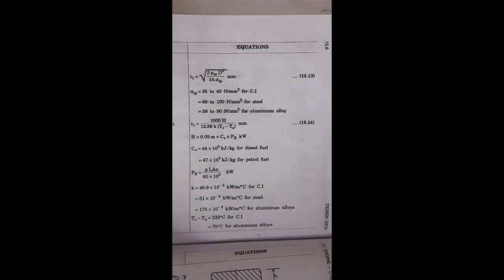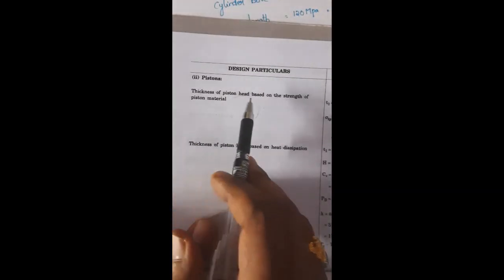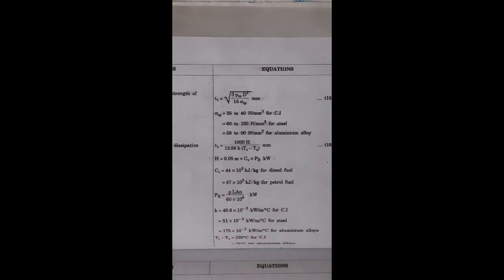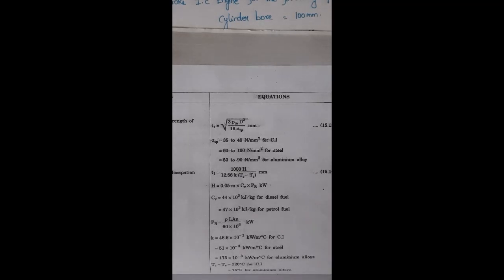Thickness of piston head based on strength criteria uses the formula: t1 = √(3 × pm × D² / 16 × σ_tp), where σ_tp is the allowable tensile stress of the piston material. Since the material is cast iron, we use 30 to 40 N/mm². We will assume σ_tp = 40 N/mm² for cast iron.